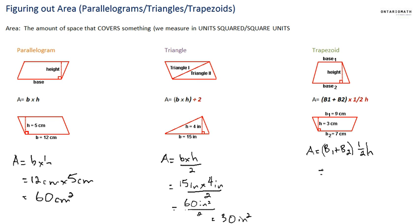So base 1 here is 9 centimeters plus base 2 is 7 centimeters, and we're going to add those and then multiply it by half of the height. So the height is 3 centimeters, we're going to multiply it by 1.5 centimeters, which equals 9 plus 7 is 16 centimeters times 1.5 centimeters, which equals 24 centimeters squared.